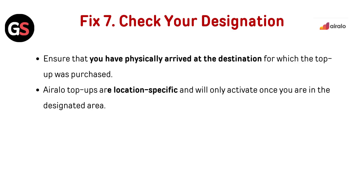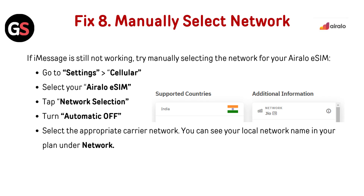Check your destination. Ensure that you have physically arrived at the destination for which the top-up was purchased. AirLo top-ups are location-specific and will only activate once you are in the designated area. If the eSIM is still not working, try manually selecting the network. Go to Settings, then Cellular, select your AirLo eSIM, tap Network Selection, then turn Automatic off and select the appropriate carrier network. You can see your local network name in your plan under 'Network'.